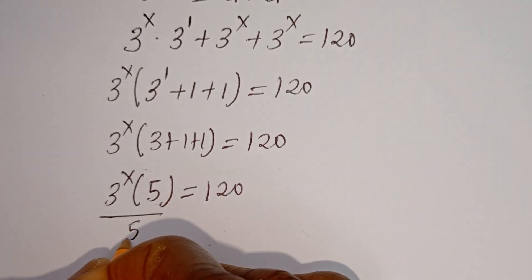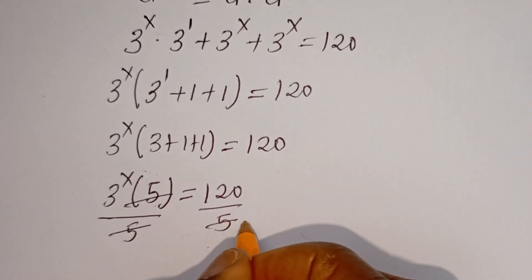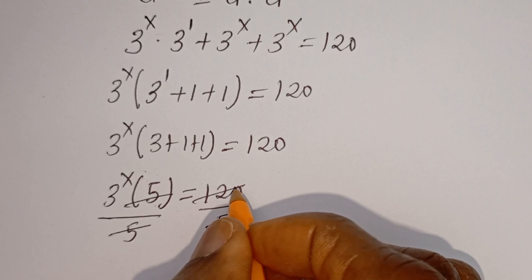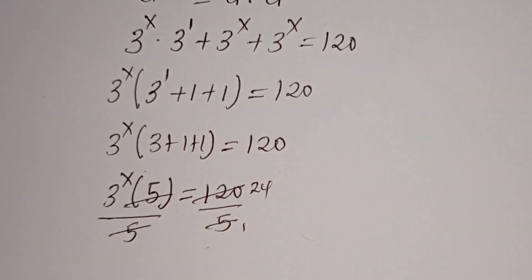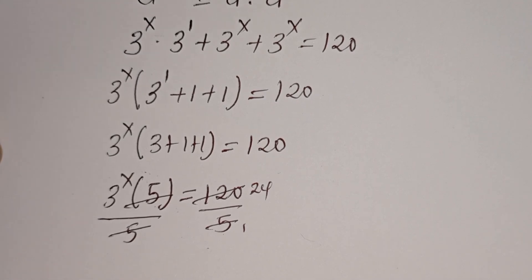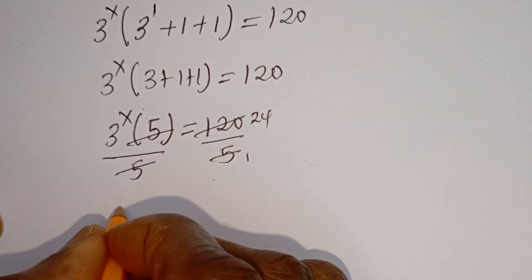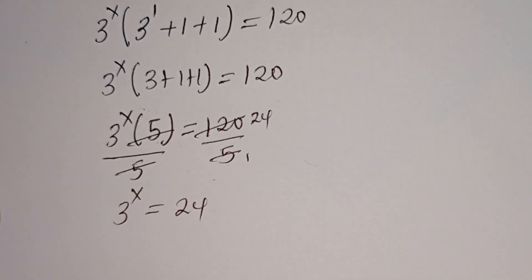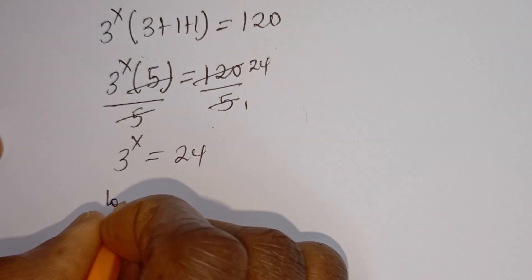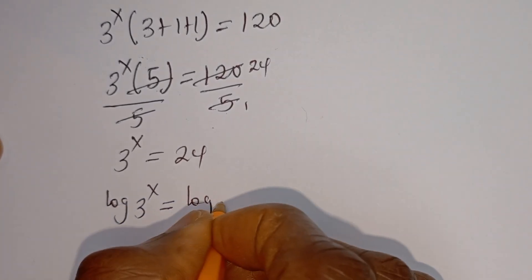Now let's divide both sides by 5. This cancels this, giving us 3 to the power of S is equal to 120 divided by 5, which is 24. Then 3 to the power of S is equal to 24.